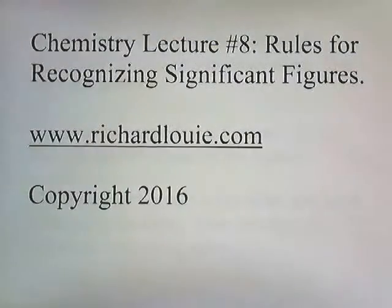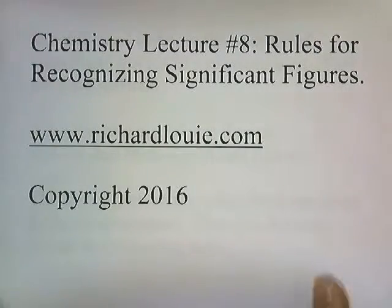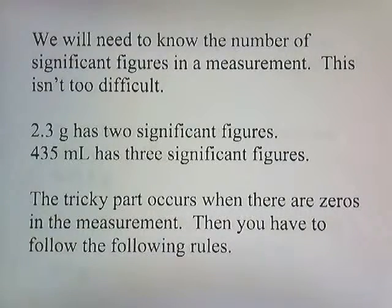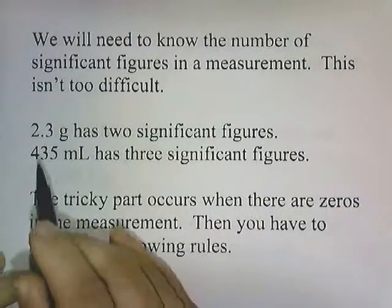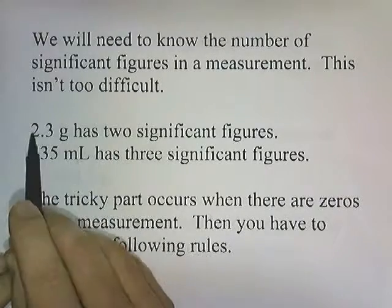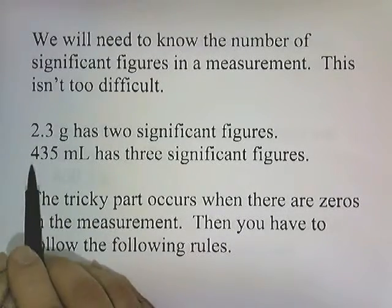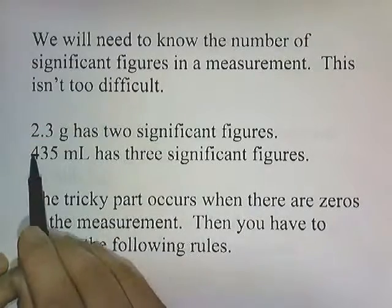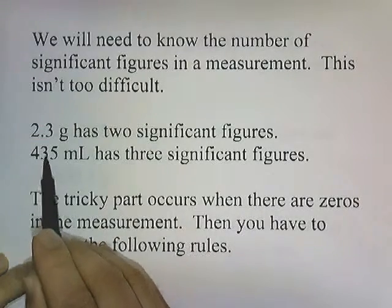Chemistry lecture number eight, rules for recognizing significant figures. We will need to know the number of significant figures in a measurement. This isn't too difficult. 2.3 grams has two significant figures — one, two. 435 milliliters has three significant figures — one, two, three.